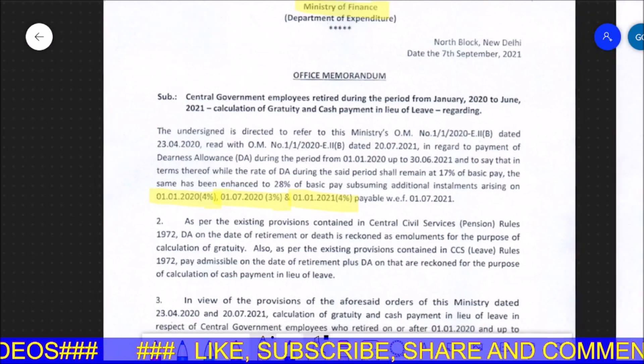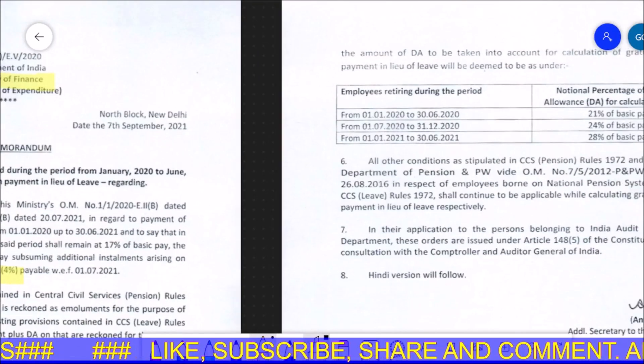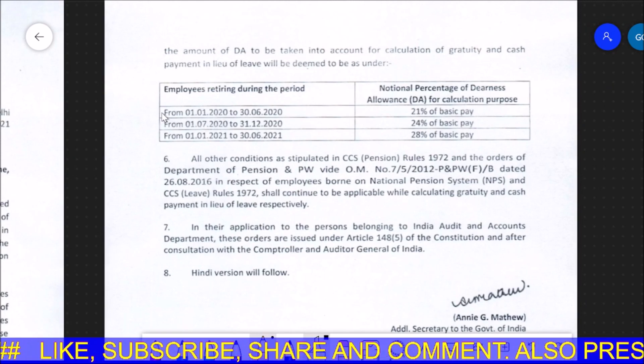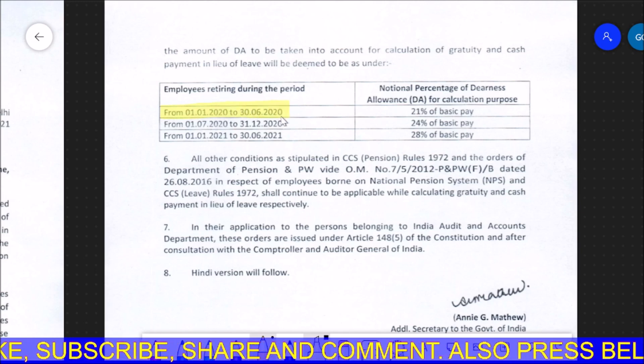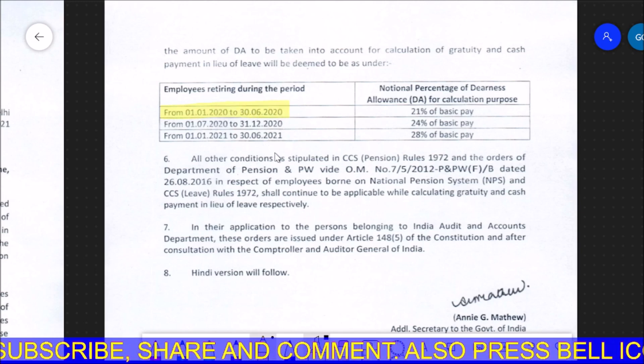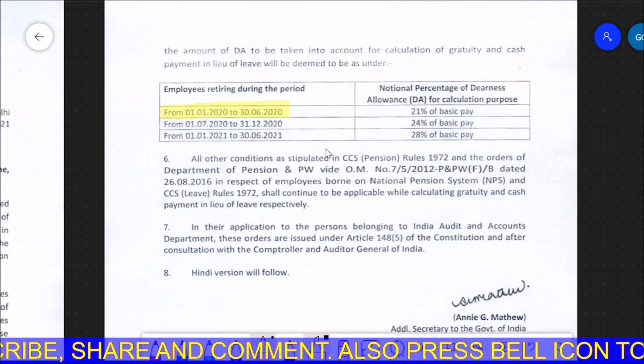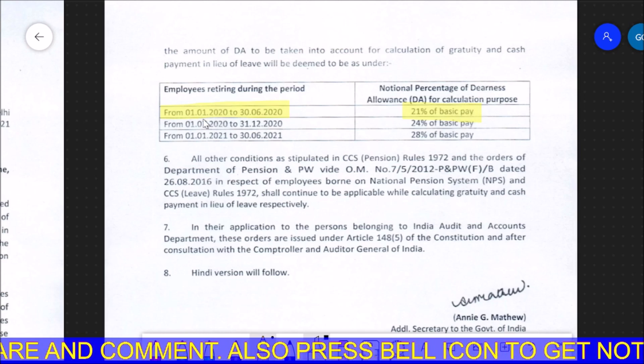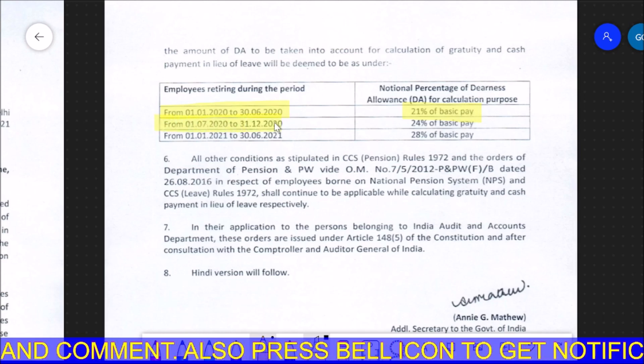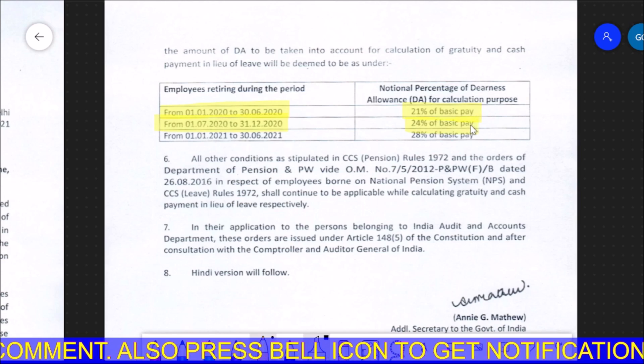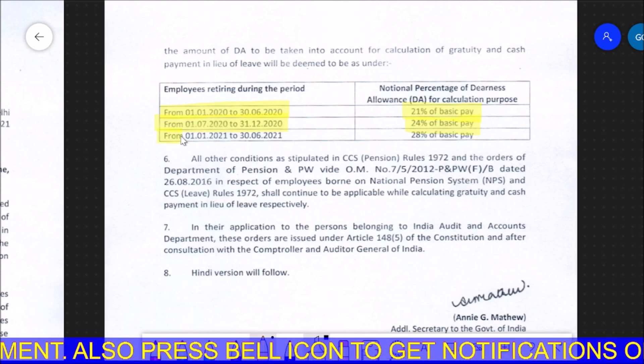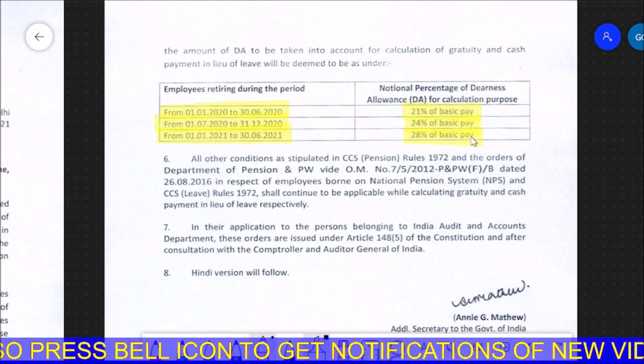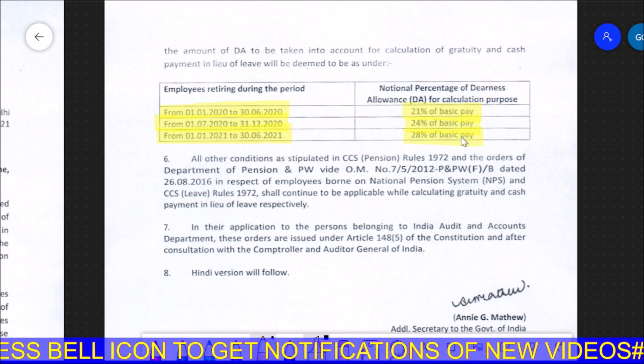So in this regard they have told us that when you calculate leave encashment and gratuity, those who retired between January 1, 2020 and June 30, 2020 will have calculation of 21% DA. Those who retired from July 2020 to December 2020 will get 24%, and those who retired from January 1, 2021 to June 30, 2021 will have their calculation at 28% DA.